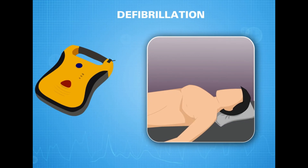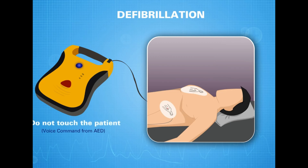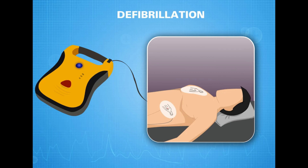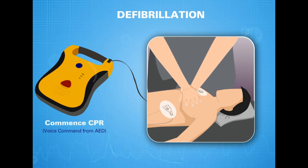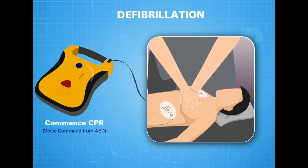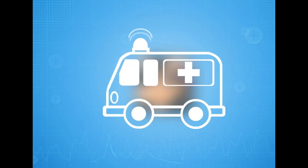Defibrillation: remove the person's clothing and attach the two pads of the AED on the chest of the victim as instructed on the device. Once the pads are attached, do not touch the patient as the device analyzes the casualty's heart rhythm. If the AED advises a shock, clear the patient's vicinity and press the shock button as advised. Once the shock is delivered, recommence CPR and continue until the casualty regains consciousness or advanced medical aid arrives.